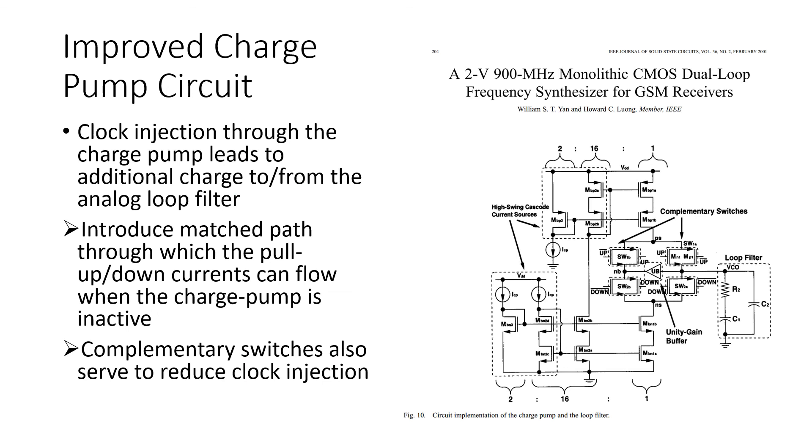Another non-ideality in charge pump circuits that can cause problems in PLLs is charge injection. Because you're constantly turning current sources on and off via switches, somewhere you've got transistors whose channel regions are being vacated of charge when they turn off, and then being repopulated with charge when the switches turn on again. So that charge has to come from somewhere. And inevitably some of it will be coming to and from the output of the charge pump, which is causing glitches at the output of the charge pump, which in turn causes glitches in the phase at the output of the VCO.